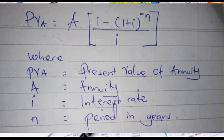The formula is: PVA = A × [1 − (1 + i)^(−n)] / i, where PVA is the present value of annuity, A is the equal installment we are looking for, i is the interest rate, and n is the period in years.